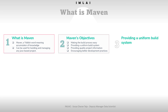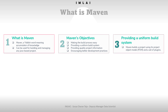The second objective is providing a uniform build system. Maven builds a project using its Project Object Model — we call it POM, P-O-M — and a set of plugins. Once you familiarize yourself with one Maven project, you know how all Maven projects build. This saves time when navigating many projects.